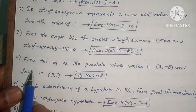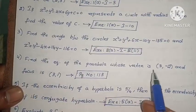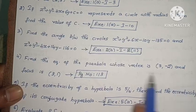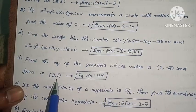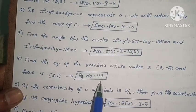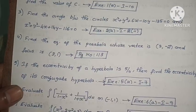Next: find the equation of the parabola whose vertex is (3, -2) and focus is (3, 1). This is an example problem on page number 113.